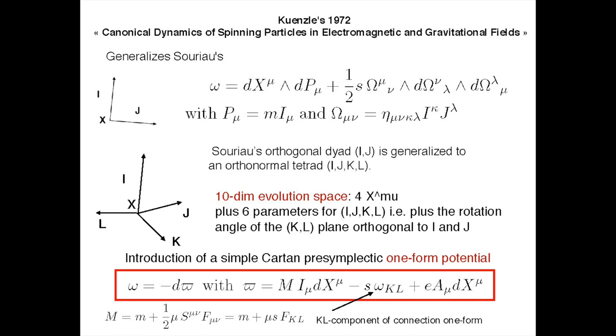This gives a ten-dimensional evolution space — one more dimension than for special relativity. It is very simple to guess what is the good one-form, and this is what Künzle discovered. A way to guess it is that if you couple to electromagnetism, you know you need A_mu dx^mu in the one-form, which is not gauge invariant, and the analog gives d of A in the symplectic form — the gauge-invariant F_mu_nu. In the same way, you need something at the level of the connection, and then there will be curvature in the symplectic two-form.